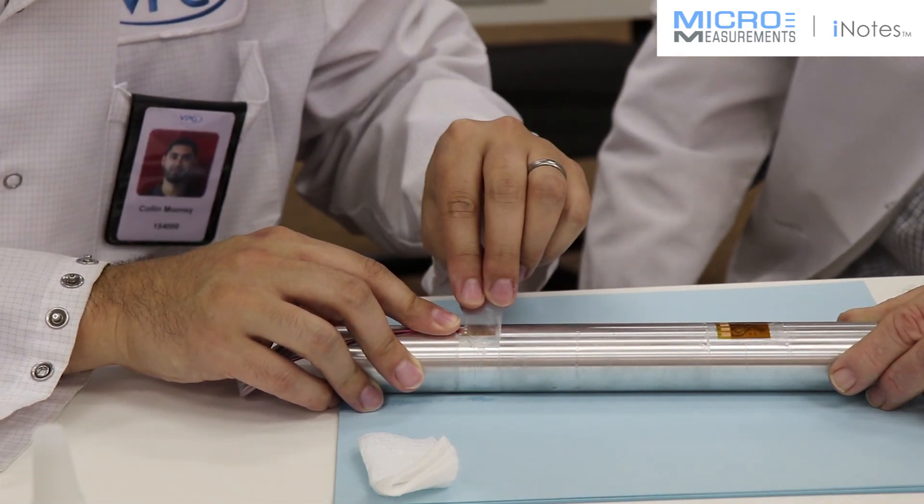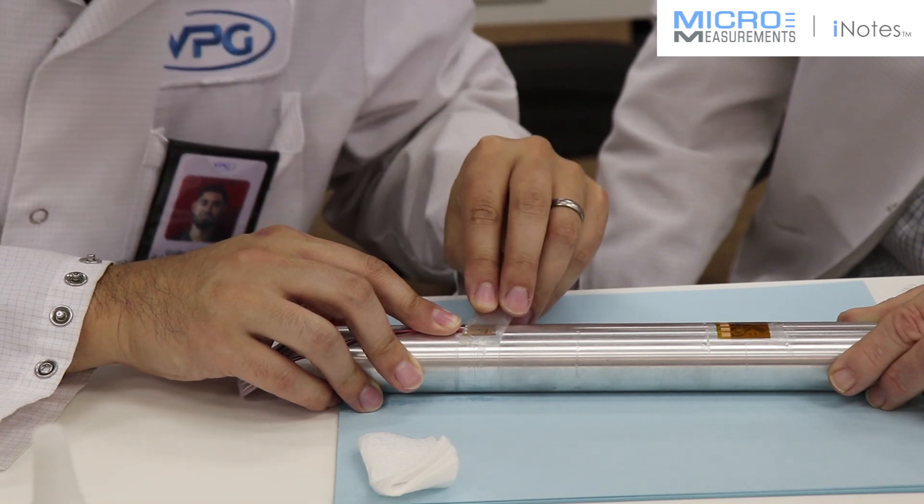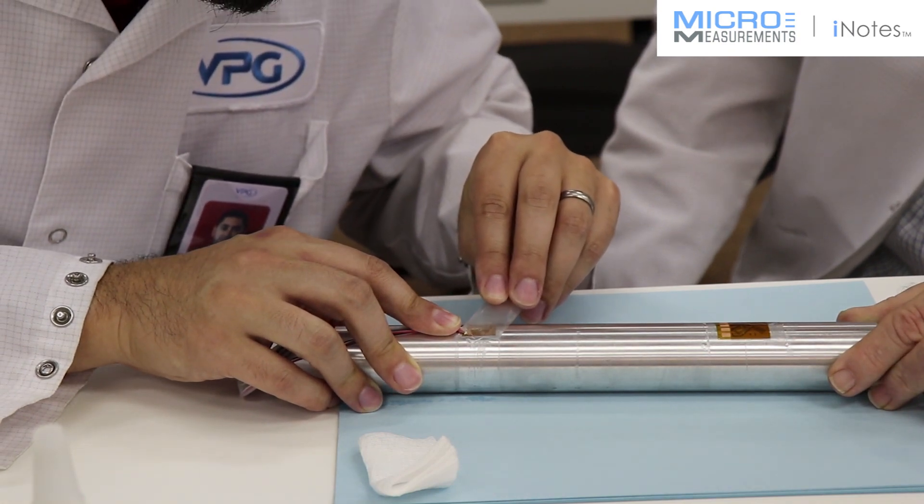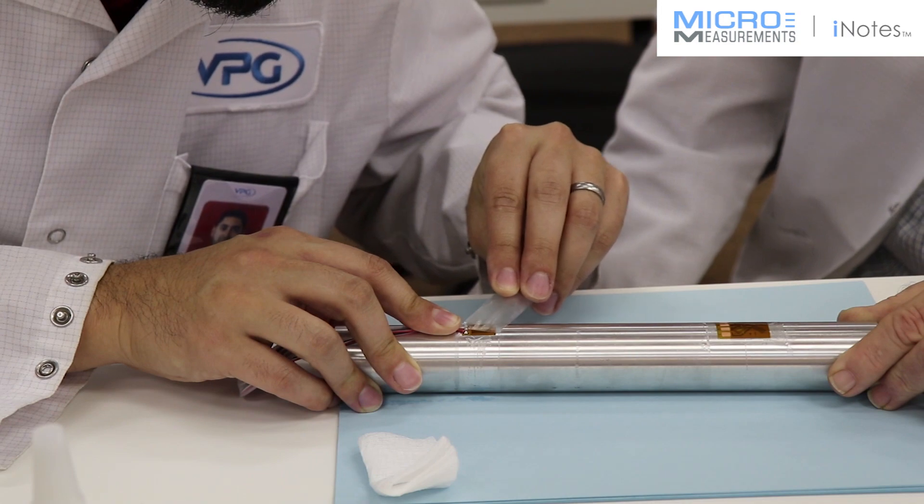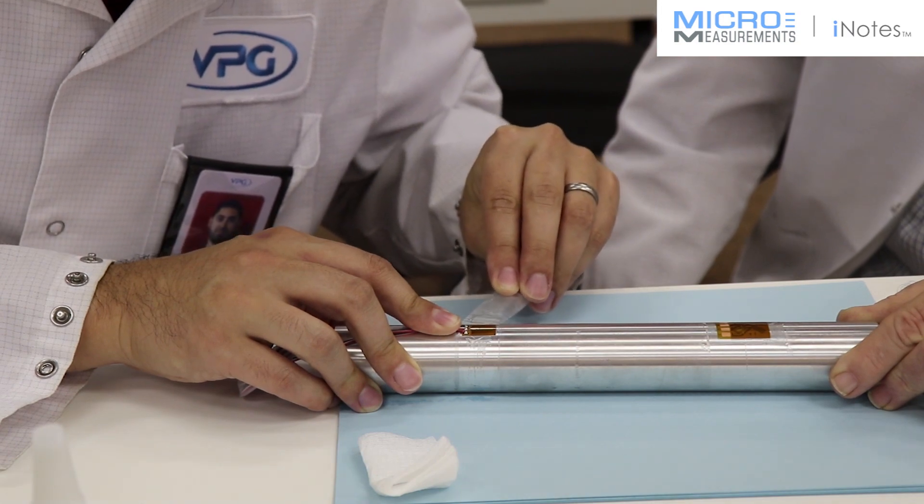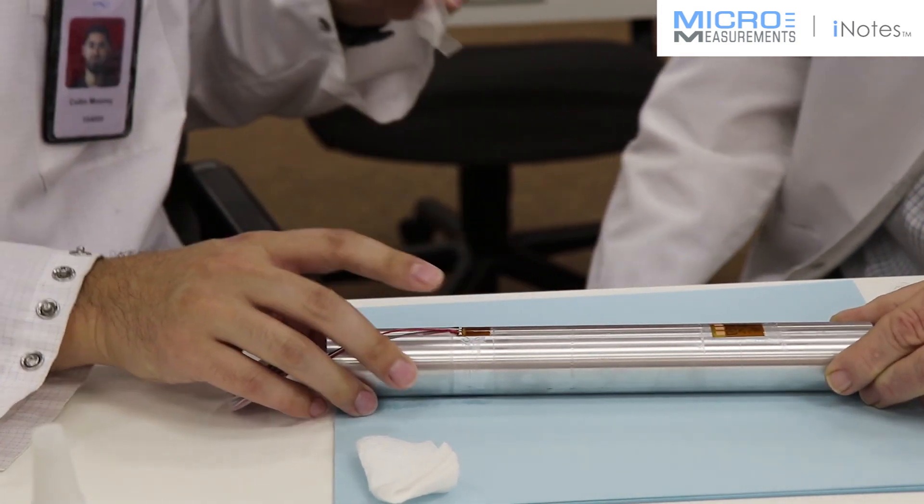He's holding down the lead wire system to keep it from straining the gauge. He's also going to pull it 180 degrees back on itself, being careful.